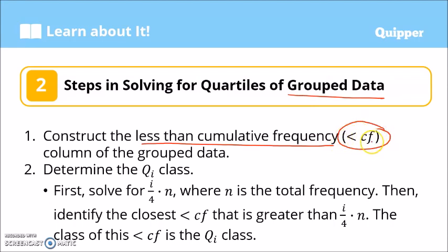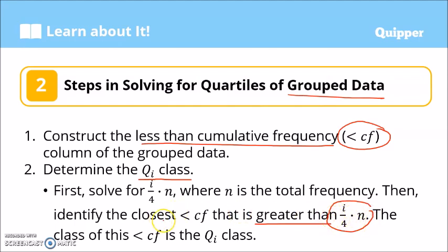Then we determine the Q sub i class. If we want to determine the first quartile, we determine the first quartile class. To do this, we solve for i over 4 times n, where n is the total frequency. Then we identify the closest less than cumulative frequency that is greater than that value — closest to it. The class of this less than cumulative frequency is the Q sub i class.